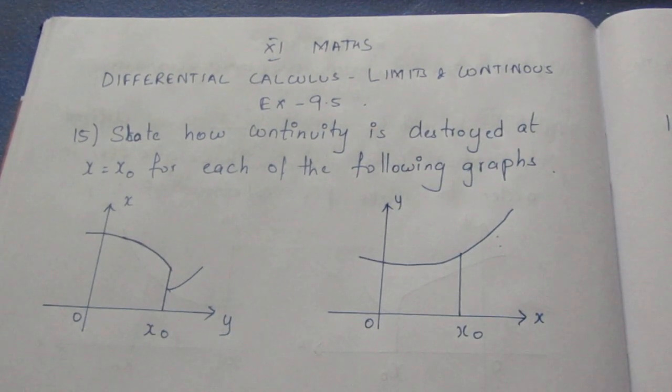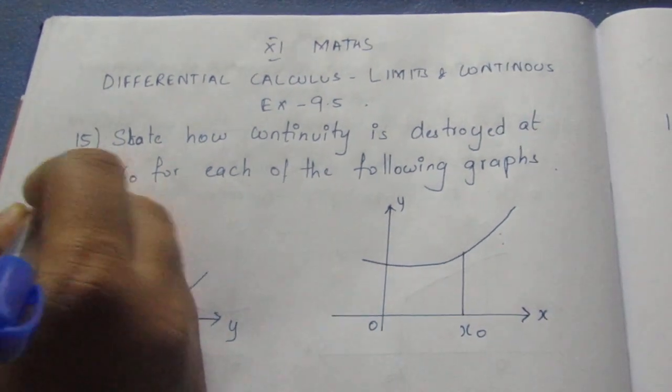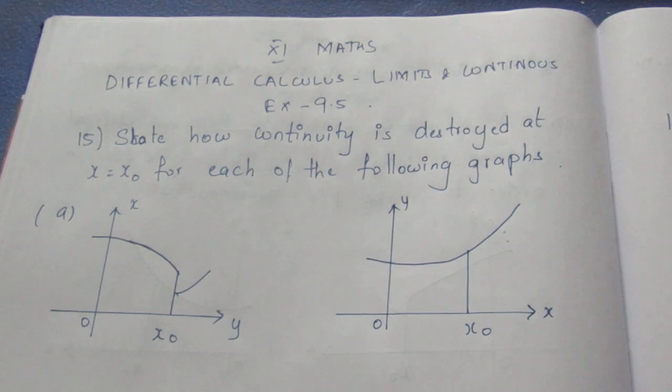The question states: how is continuity destroyed at x equals x0 for each of the following graphs? So we have graph A, graph B, graph C, and graph D specified here.